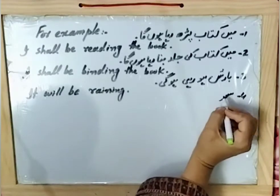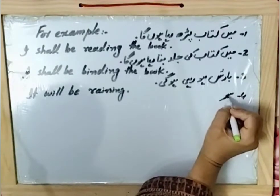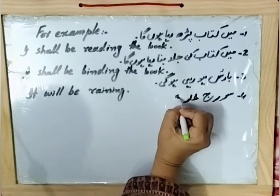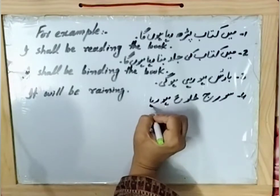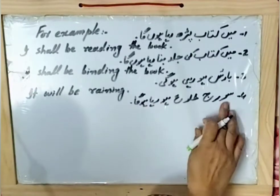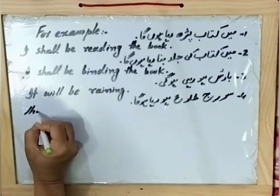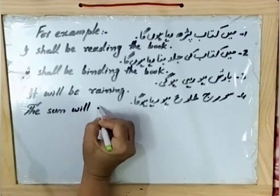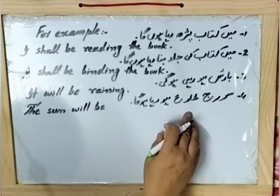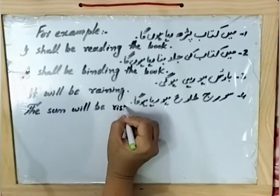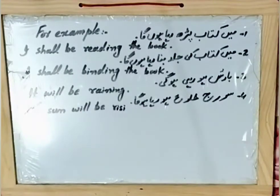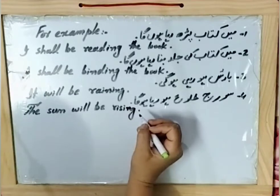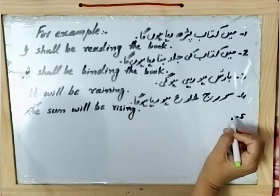Example number four: 'Suraj talu ho raha hoga' — the sun will be rising. Subject is 'Suraj' — 'the sun.' Helping verb: 'will be.' The English for 'talu hona' is 'rising' — from 'rise.' When a word ends in 'e', we remove the 'e' and add '-ing.' So: the sun will be rising.